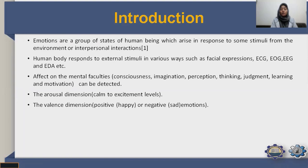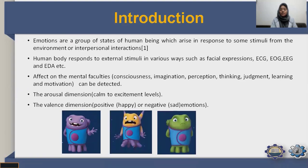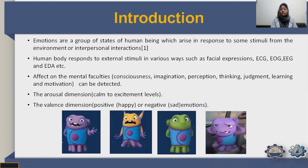I'll explain the arousal dimension and the valence dimension discussed in our paper. The arousal dimension is the intensity level, ranging from calm to excitement. The valence dimension is the level of pleasantness, ranging from happy to sad — for example, happy is a positive emotion and sadness is a negative emotion.